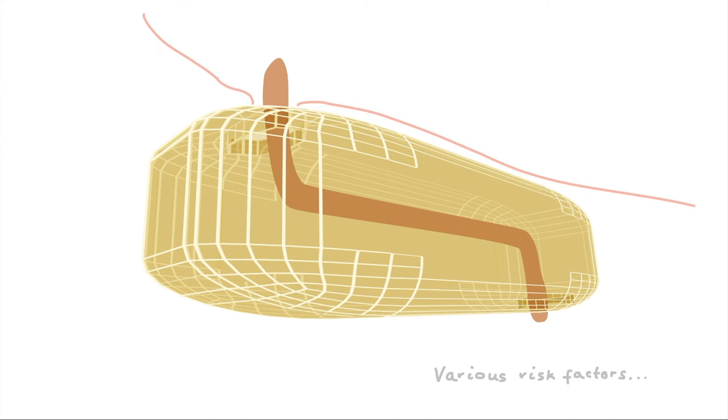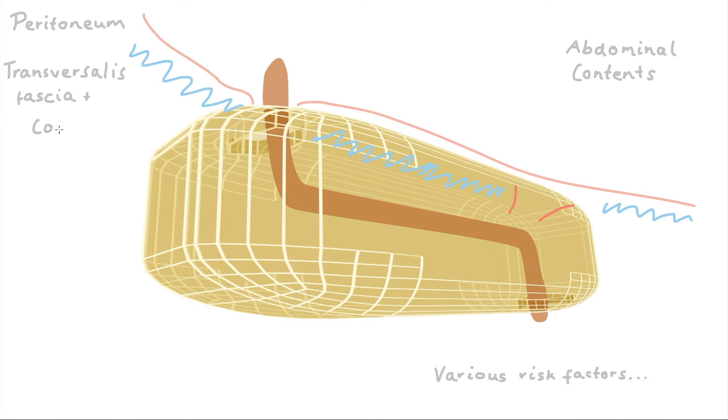So I'm drawing out the peritoneum here. Behind that is the abdominal contents. In blue we have the transversalis fascia. The deep inguinal ring is a hole in that. We have the conjoint tendon, medial reinforcement for the posterior wall of the inguinal canal. Then we have other abdominal muscles in the area as well like the rectus abdominis.